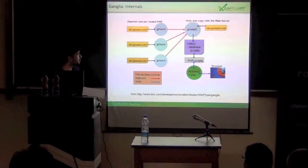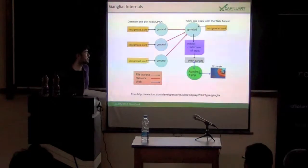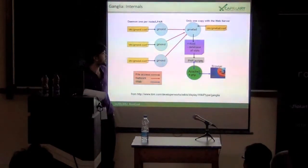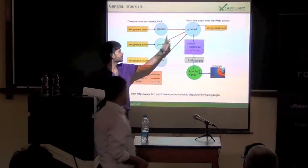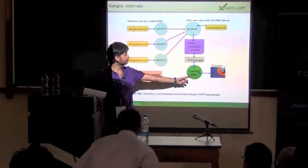This is the internal working diagram of Ganglia. It has three major components: GMETAD, GMOND and the web frontend.